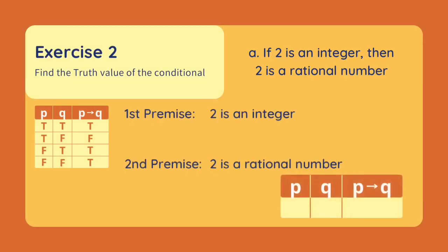Let's have an exercise. Find the truth value of the conditional. Letter A: If 2 is an integer, then 2 is a rational number.